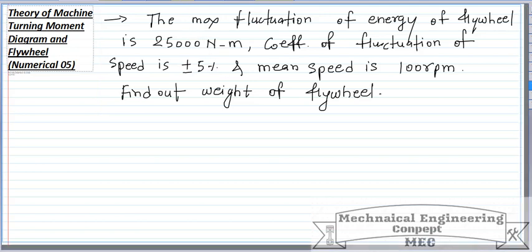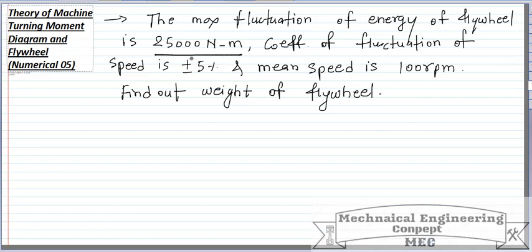The question given to us: the maximum fluctuation of energy of the flywheel is 25,000 N-m, the coefficient of fluctuation of speed is plus minus 5%, and the mean speed is 100 RPM. Then we need to find out the weight of the flywheel.